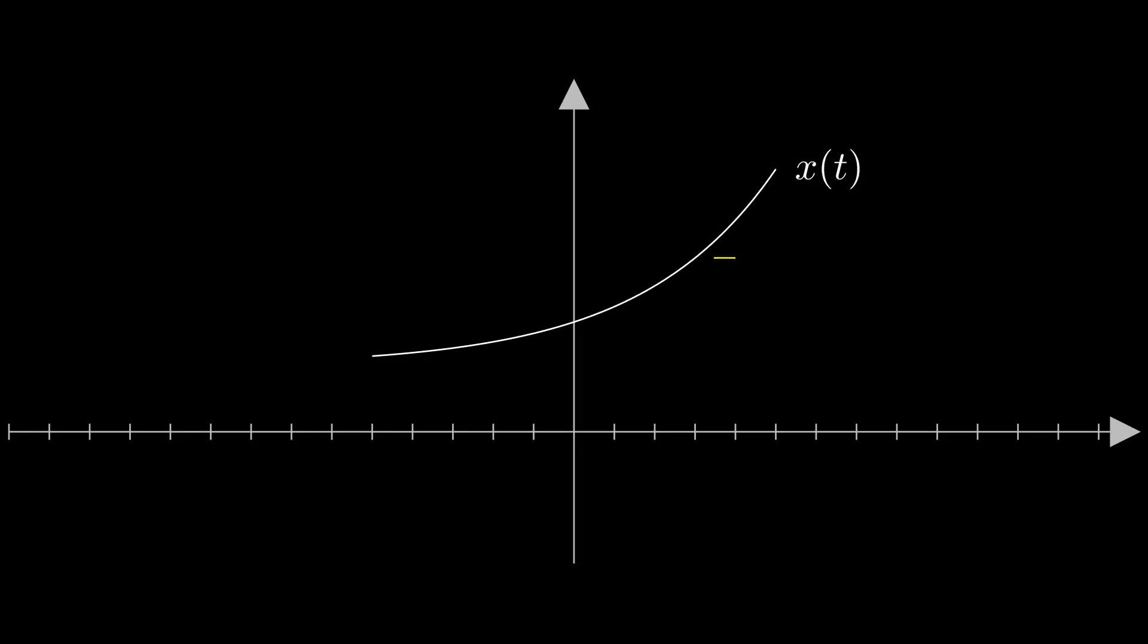Consider an arbitrary signal x(t). By dividing the time axis into uniform time intervals, the value of x(t) at each time interval can be approximated as a rectangle whose height equals the value of the function at that interval and whose width equals delta. This rectangle can be considered as an impulse function with an area equal to the value of the function at this time interval times delta.